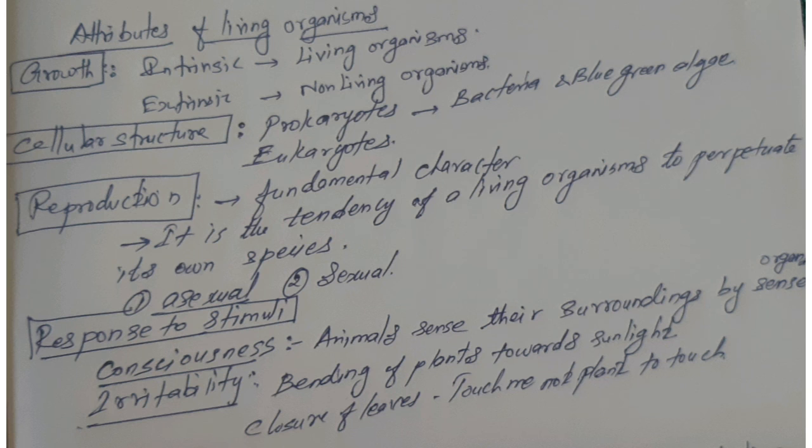In living things, the first process is that new cells are produced through cell division. Newly formed cells elongate, increasing in size. That is the growth in living organisms.